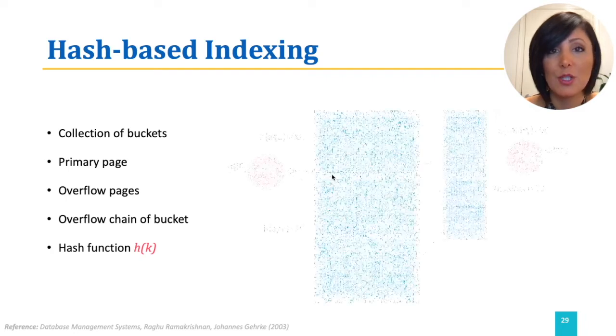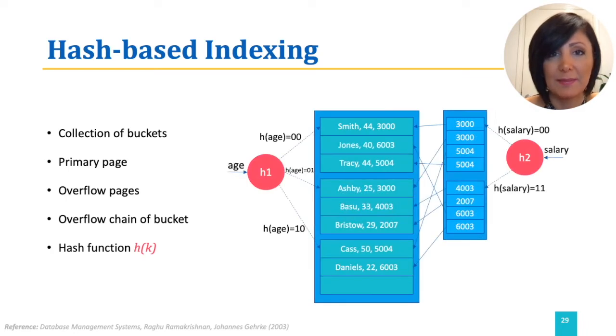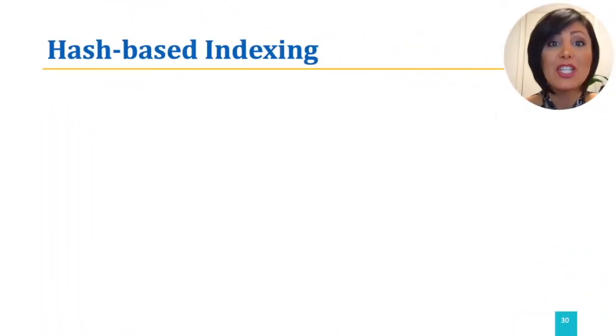The figure shows hash-based indexing with two hash functions. The data is sorted in a file hashed on age. Applying the hash function on each field identifies the page that the record belongs to. There is also a second index on salary that contains pointers to data records with search key values. As you can tell, the hashing function is an important part of hash-based indexing.